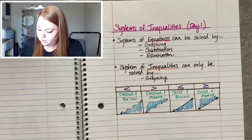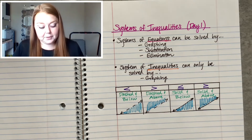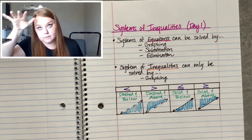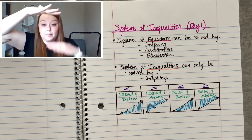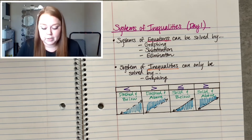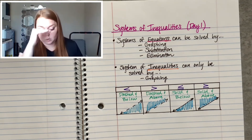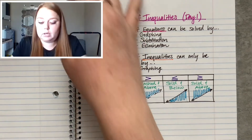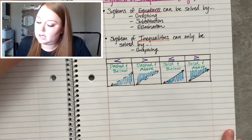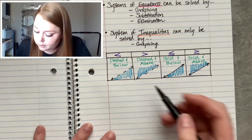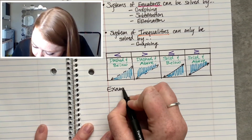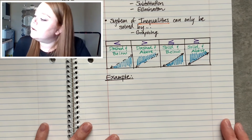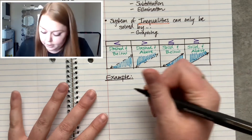Hopefully that looks a little familiar. Now, the only difference is instead of graphing a single inequality, now we have two because we're working with a system which has two inequalities. So we're going to do just one example in your notebook and then I'll show you a few on Delta Math. We'll do one example in your notebook, meaning you only have to draw one graph. Here's our system.